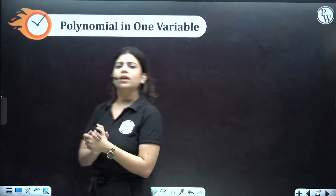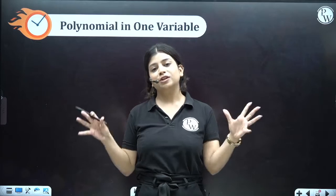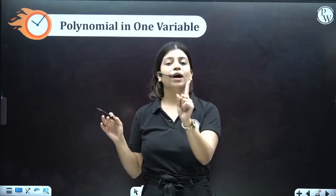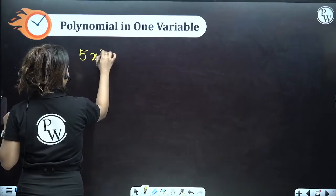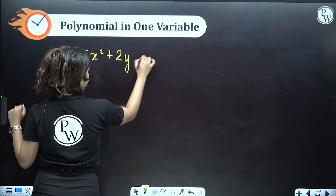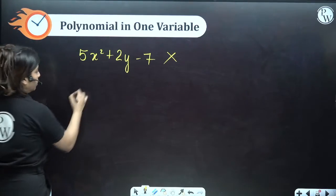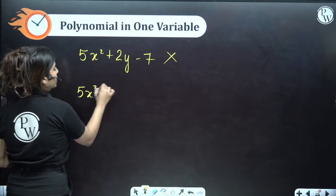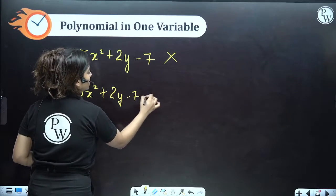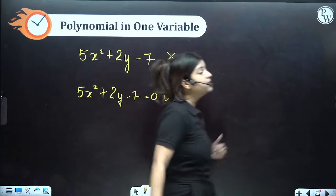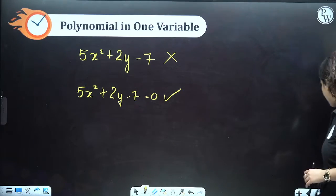Polynomial in one variable means that in the entire expression, there should be only one variable used. For example, 5x² + 2y − 7 is not a polynomial in one variable because it has two variables. Whereas something like 5x² + 2x − 7 = 0 would be a polynomial in one variable.